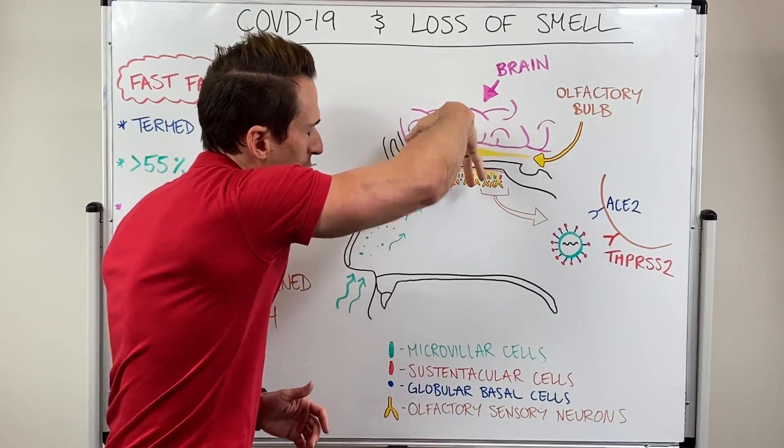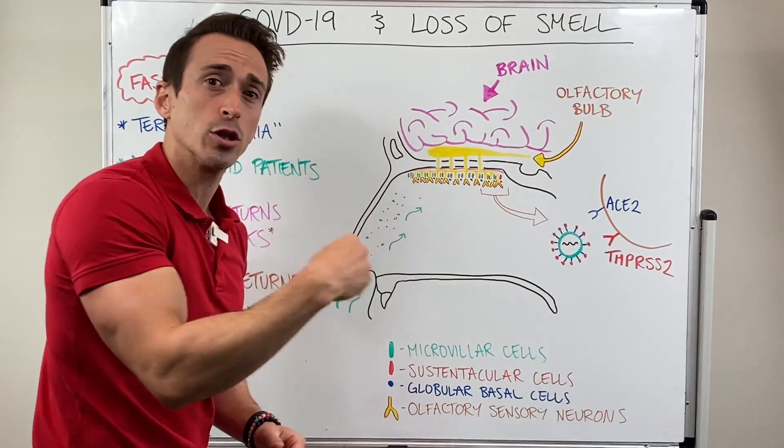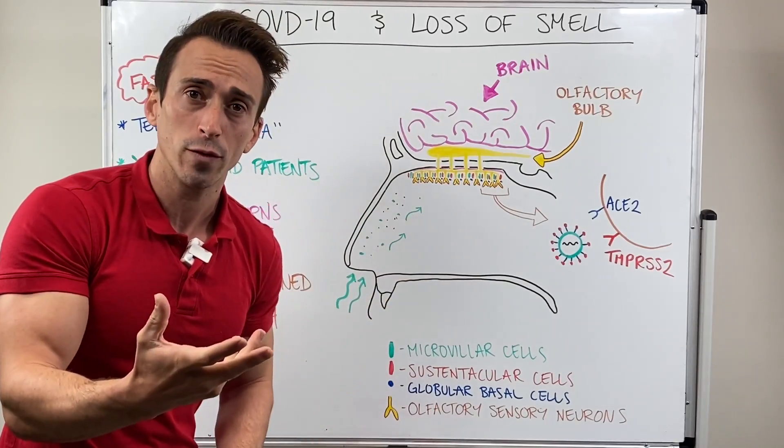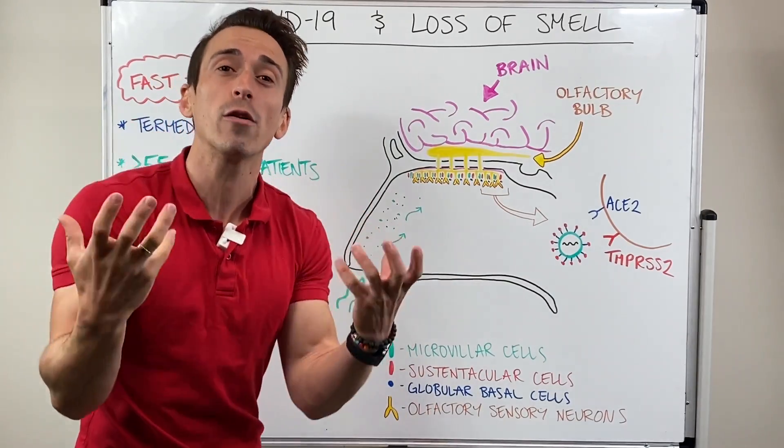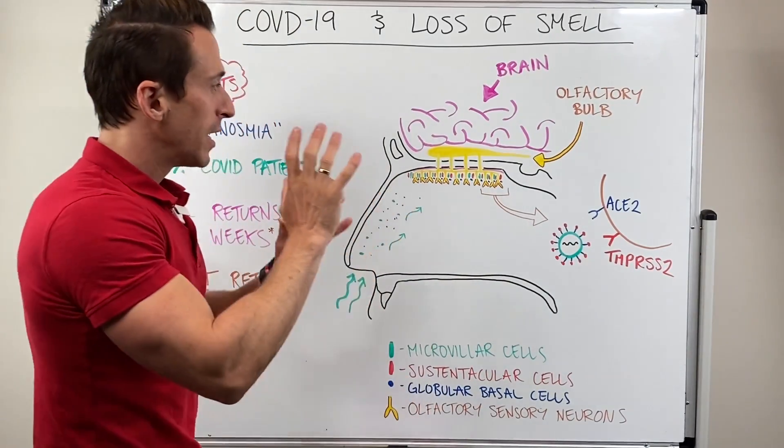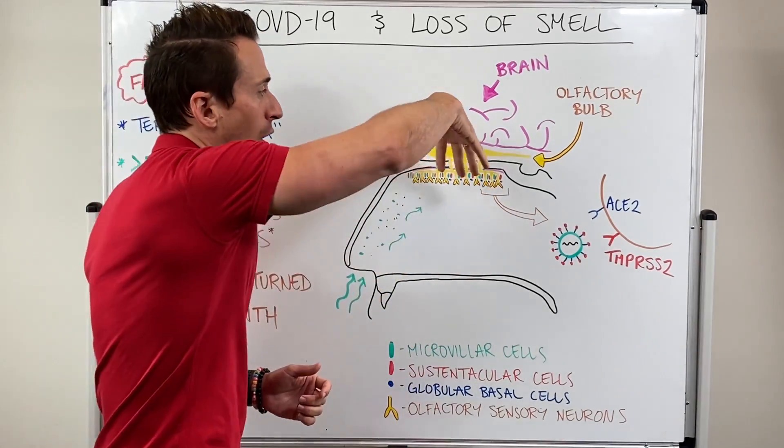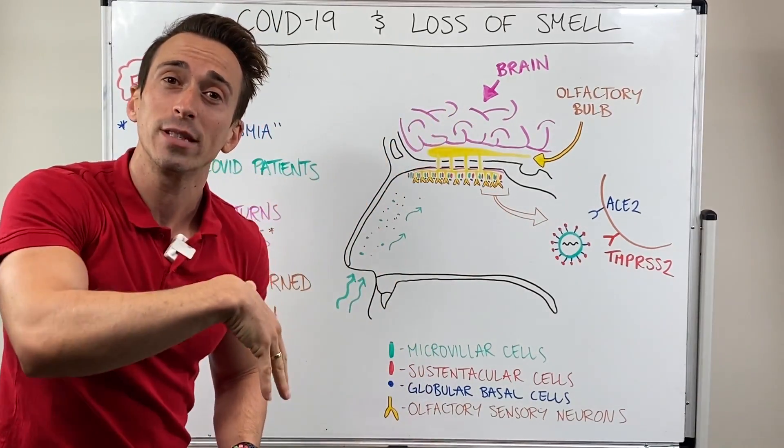The neurons that project through will pick up these chemicals known as odorants and send the signal directly through to the olfactory bulb and then to the central nervous system and brain for us to be aware of what we've smelled. This olfactory epithelium isn't just made up of these olfactory neurons or olfactory sensory neurons.